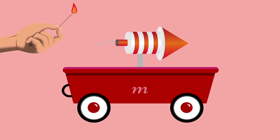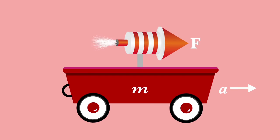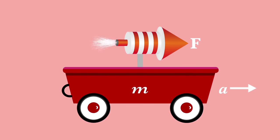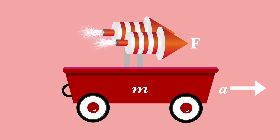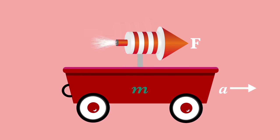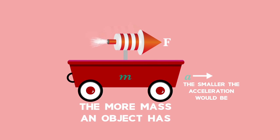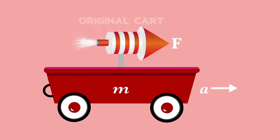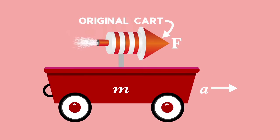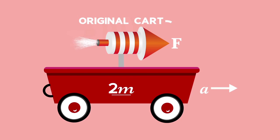To summarize the second law in plain terms: the harder you push something, the faster it will accelerate. So if the cart in the picture is pushed by two rockets, the size of the acceleration would increase too. Mass also affects acceleration — the more mass an object has, the smaller the acceleration would be. Taking our original cart with one rocket and multiplying the mass by two would halve the acceleration.